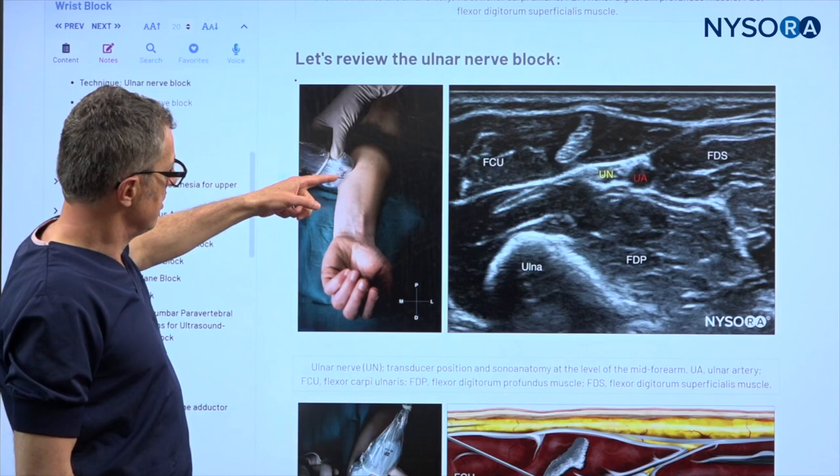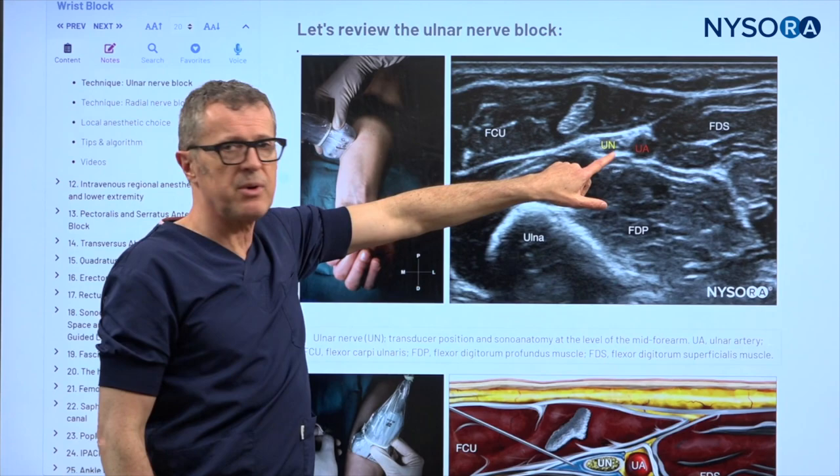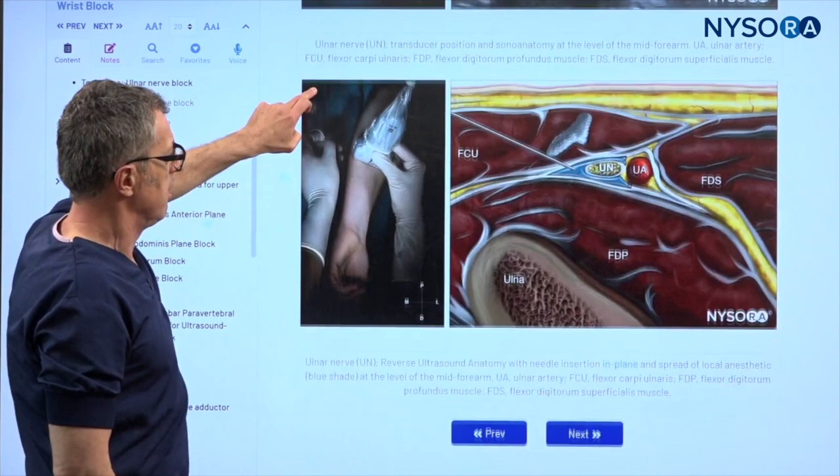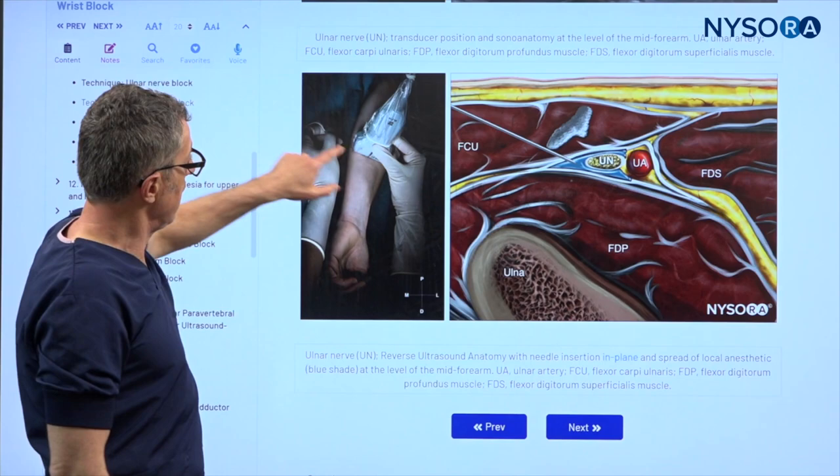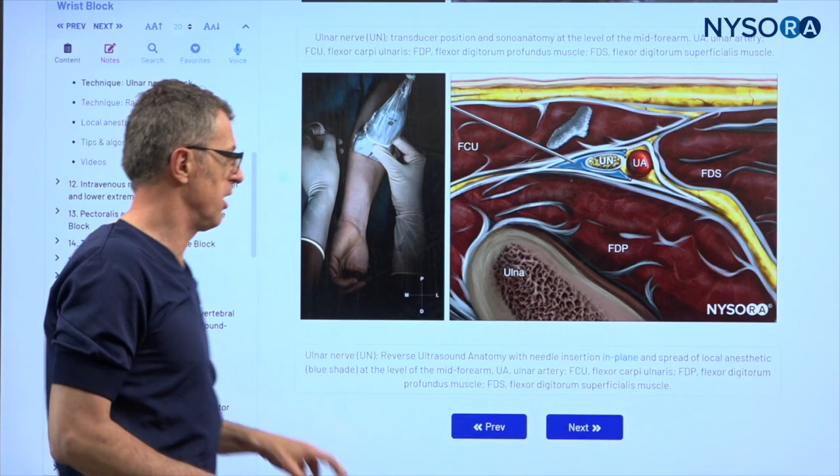Let's review the ulnar nerve block one more time. That's the probe position on the medial side. Here we can see the image we're trying to accomplish — the ulnar nerve, the ulnar artery, and the fascia sheets around them. This is the logic behind the block: we want to place the needle in-plane or out-of-plane between the tissue sheets that contain the ulnar nerve.